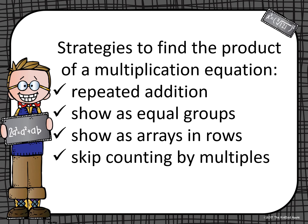So, if you think about strategies to find the product of a multiplication equation, these are the different strategies we've learned up to this point. We've talked about repeated addition, showing multiplication as equal groups and counting the number of objects in those groups. We've also shown a multiplication fact as an array in rows, and when we count all the objects in those rows we get the product. And now our other strategy is by skip counting by multiples of that specific amount — in this case we're doing 2s, 5s, and 10s. We know that 0 groups is always 0, and anytime you have a group of 1, you're going to have the number you're multiplying by 1.